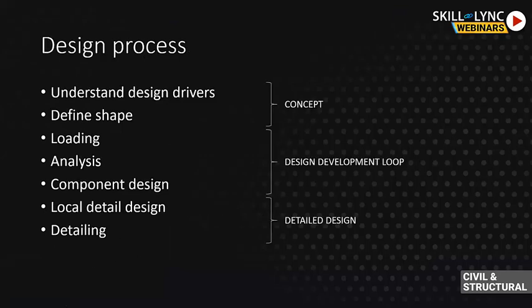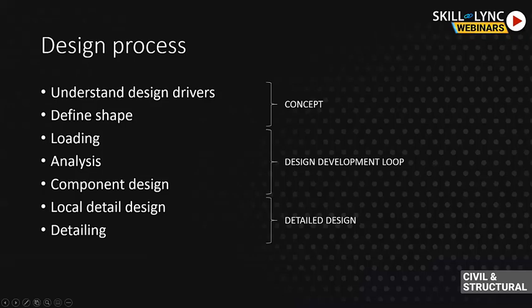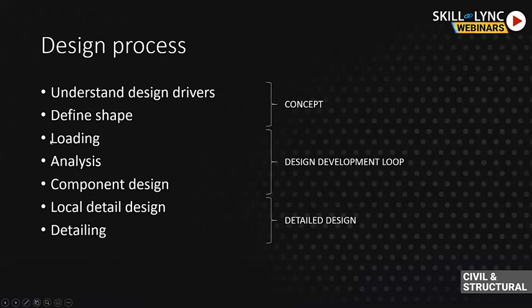To go into more depth on the design process: you typically start by understanding the design drivers — the brief, why you need the structure, what the obstacles are, what the requirements are. You write it down and start looking at it. You then define a shape or a few shapes, a few alignments to consider. Then you start the design development loop, which is really iterative. You start with loading, analyze the structure, design components, output information, and repeat the process until you're happy with the design.